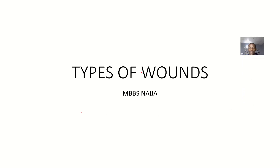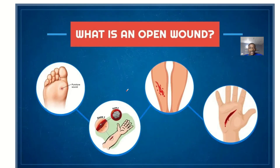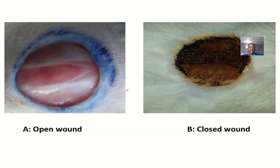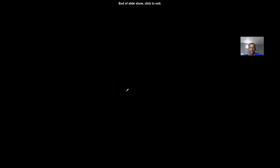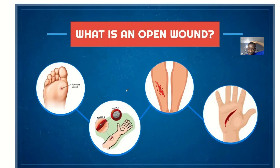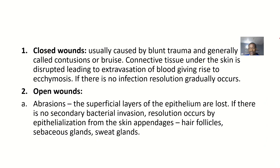Having had the overview lecture on wounds, we go on to talk about the types of wounds. This is a model classification of wounds — every other type of wound falls under either the closed type of wounds or the open type of wounds.